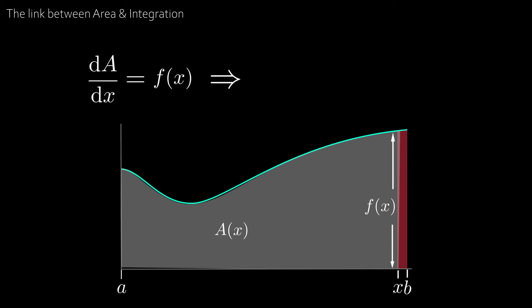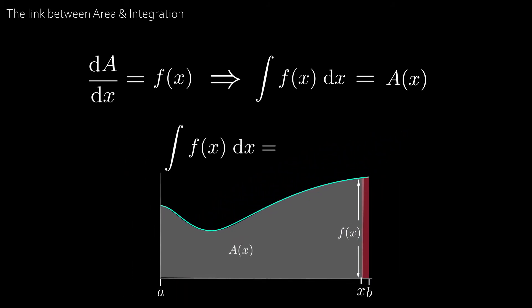And that means that the integral of f of x is equal to A of x plus c. And in this case c equals zero as we know the original function. Let's also say that the antiderivative of f of x is equal to another function capital F of x plus some constant c.